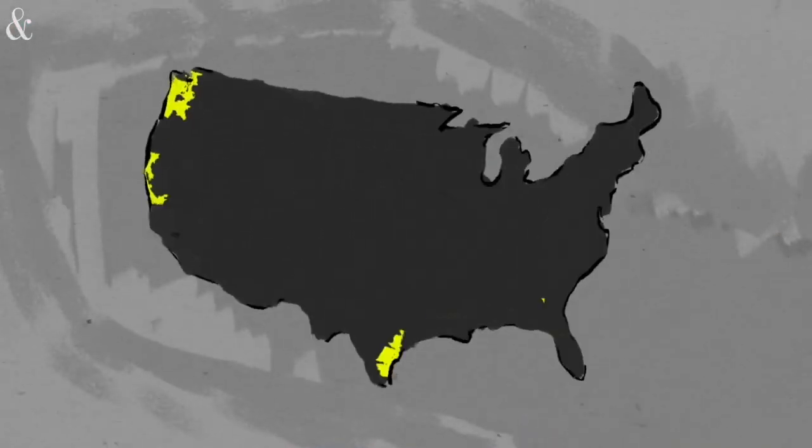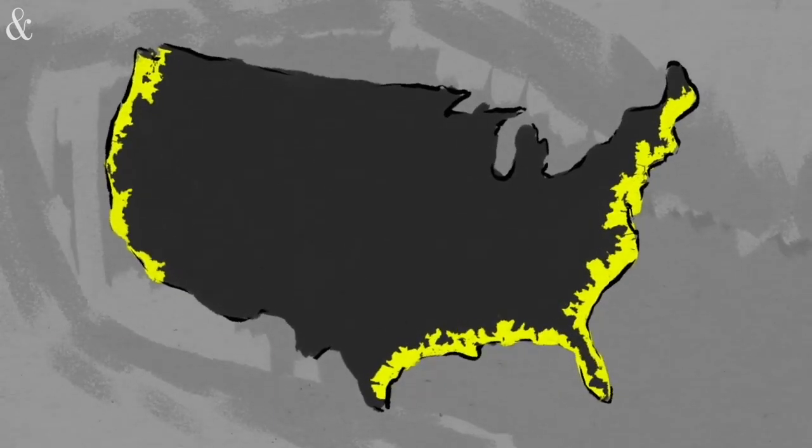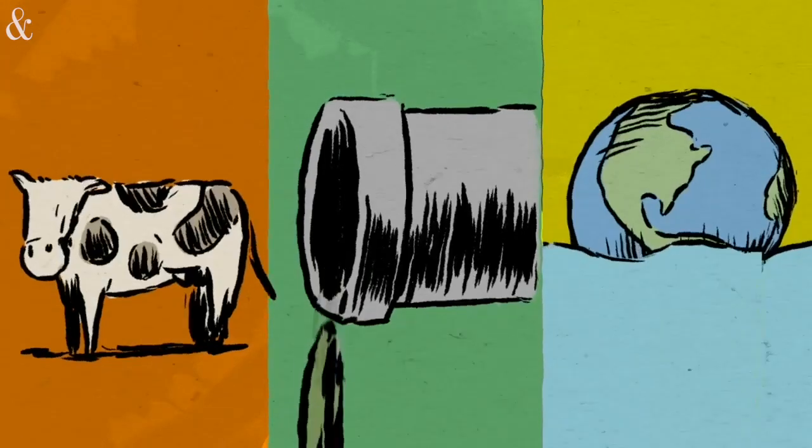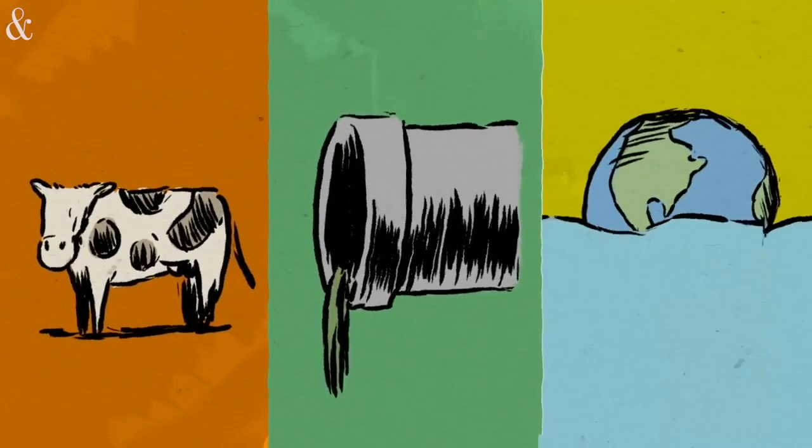For centuries, salt marshes along the U.S. coast have been disappearing. Some experts estimate 70 percent. This is primarily due to coastal development, though waste runoff, particularly fertilizer and sewage, and rising sea levels have also contributed.